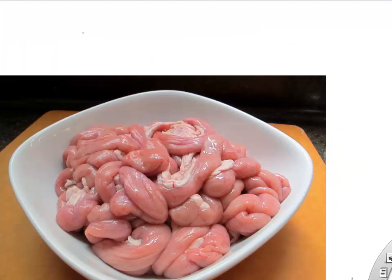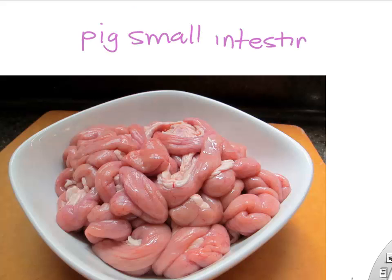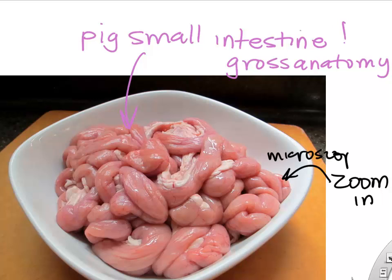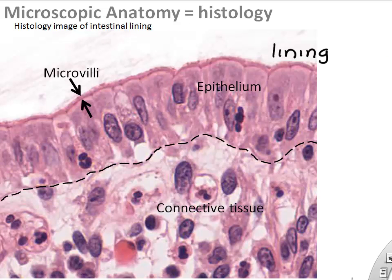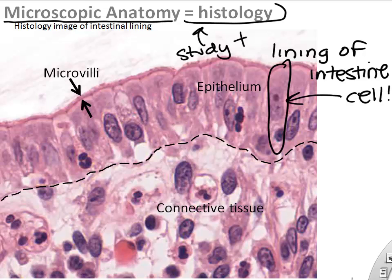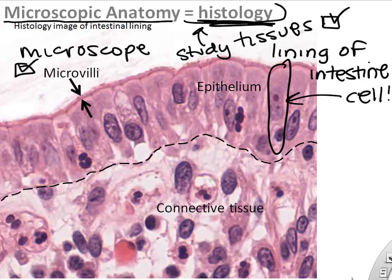One term I'll help you with: shown here are the small intestines of a pig. If we zoom way in using a microscope and look at the small intestine, we can actually see the cells that line the inside that help digest your food. People that study histology study tissues, often using a microscope. So when you hear histology, think of microscopes and the study of tissue.